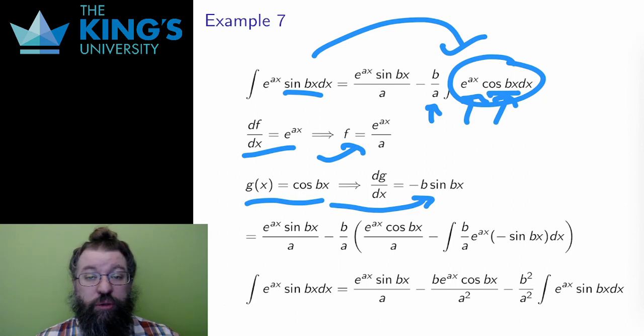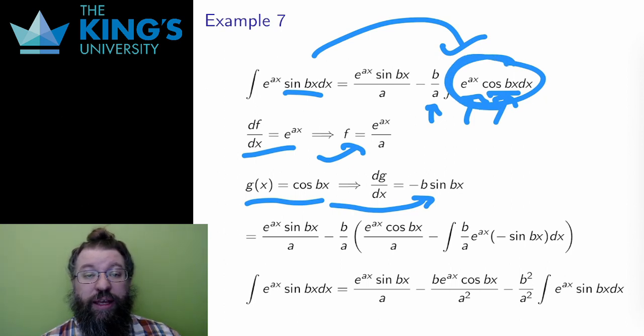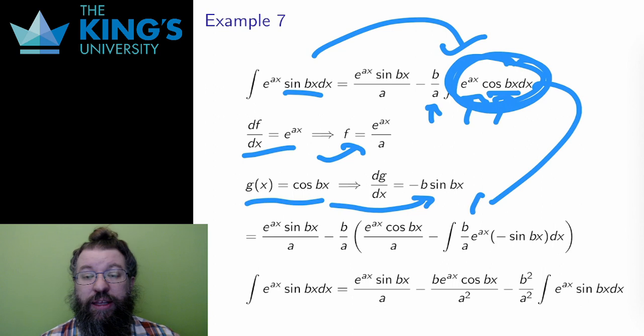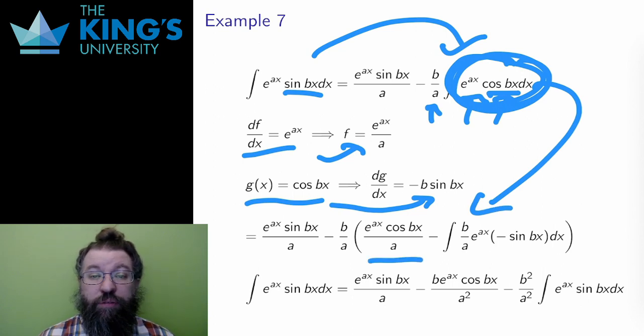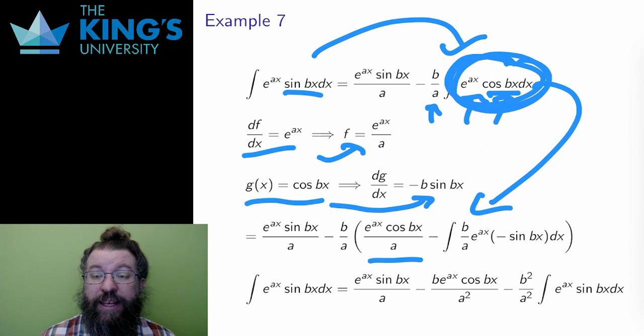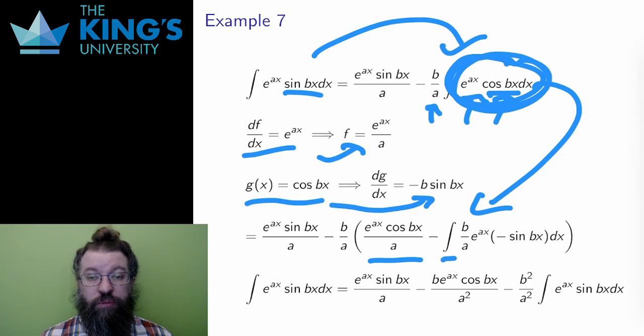So I do integration by parts again. The first term is unchanged. I'm only changing the integral. The b over a stays out in front. The fg term in integration by parts is e to the ax cos bx over a, and the resulting integral is b over a e to the ax times negative sine bx. Well, then I can pull out negative b over a from the last integral and distribute negative b over a over the two terms in the brackets.